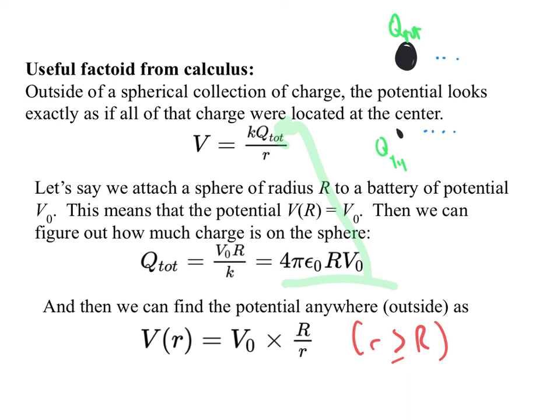And we should be very, very careful to say that R must be bigger or equal to big R. Again, useful factoid. It's not unusual to be charging spheres, so that's useful to think about. It's hard to get point charges, but it's easy to get spheres.